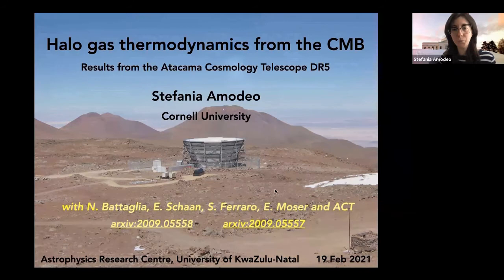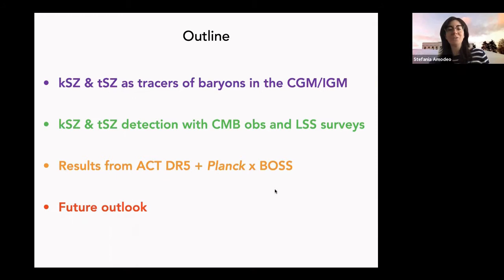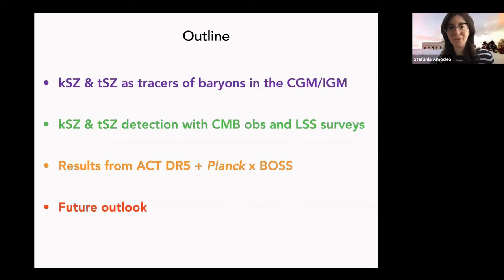This is the outline of my talk. I will discuss our observables — the kinematic and thermal Sunyaev-Zel'dovich effects — and how we can use them to probe baryon profiles in the circumgalactic medium or intergalactic medium, and how we can detect them using a combination of CMB observations and galaxy surveys. I will show results from ACT DR5 and Planck for a sample of BOSS galaxies, and discuss prospects for the future.